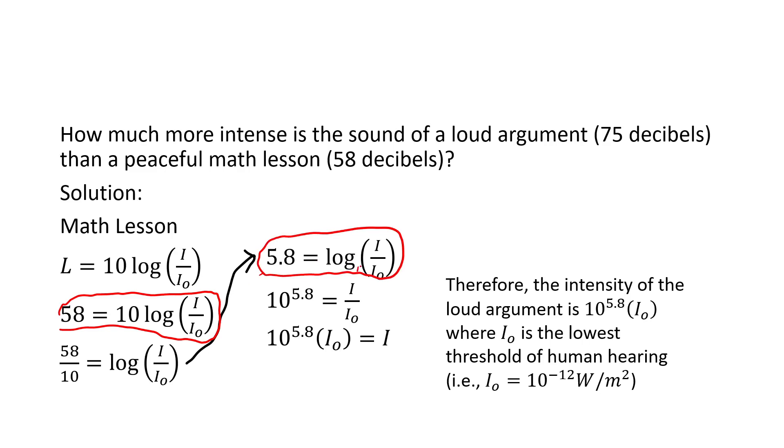Following the same procedure, since there's no base on log, we know that the base is 10. So, we can say 10 to the 5.8 is equal to this argument right here. And that's what we have written here. And then multiplying both sides by I naught, we can say 10 to the 5.8 times I naught is equal to I.